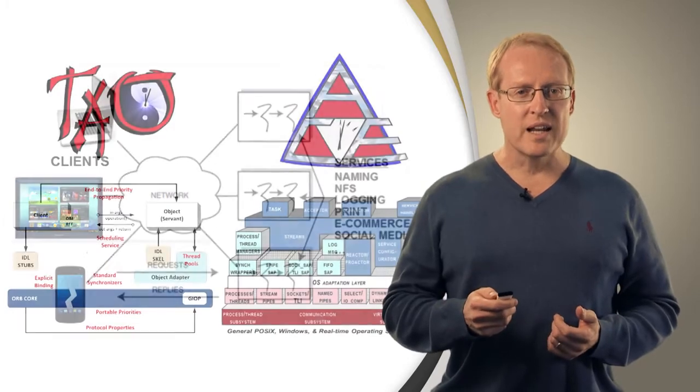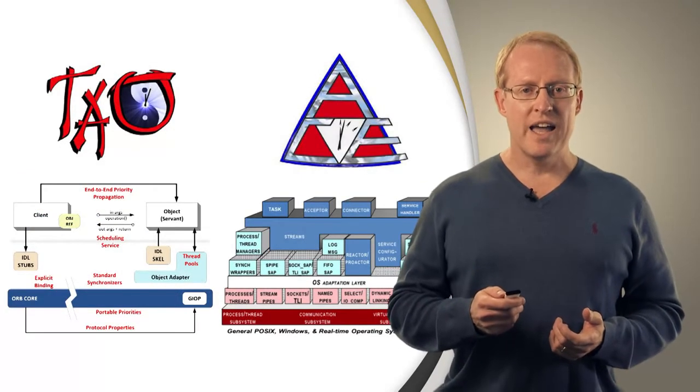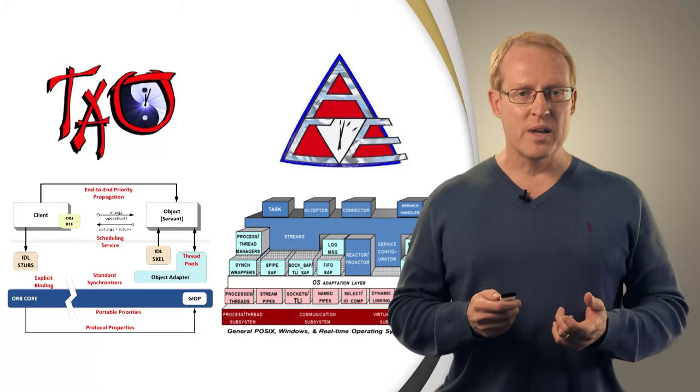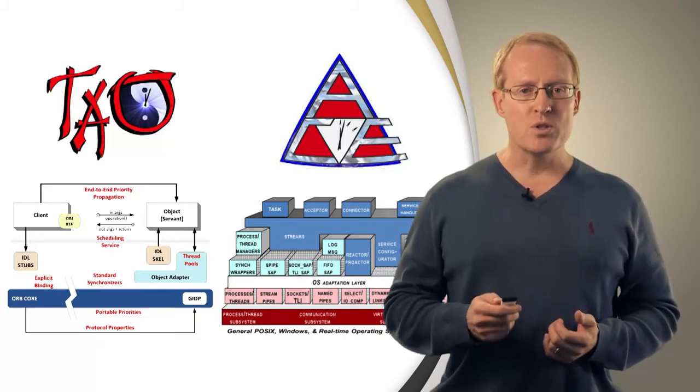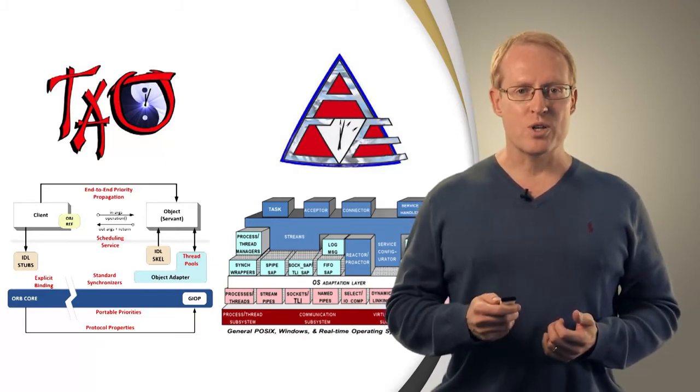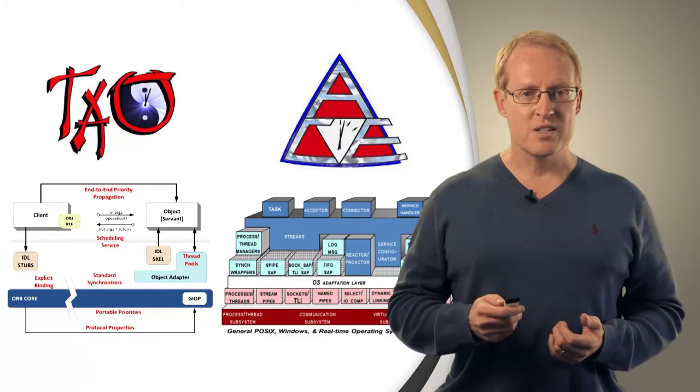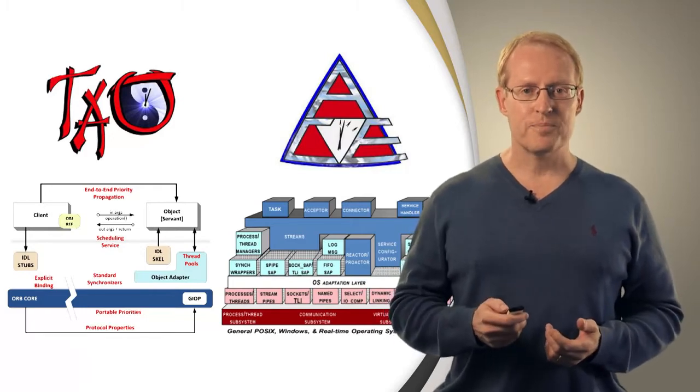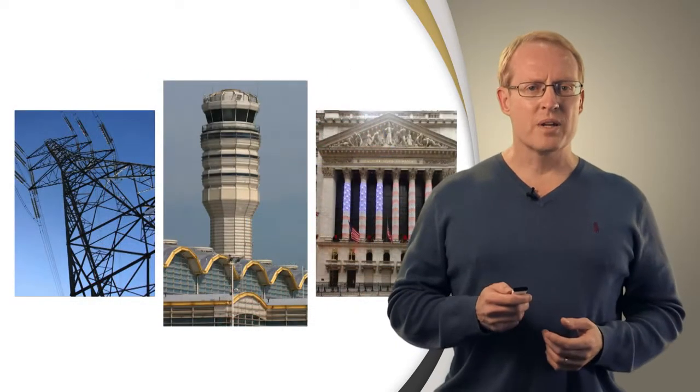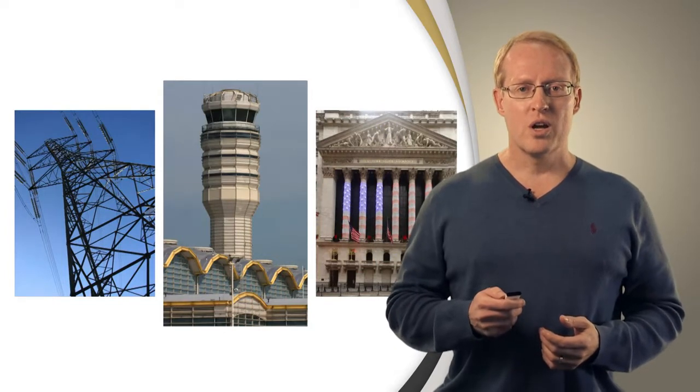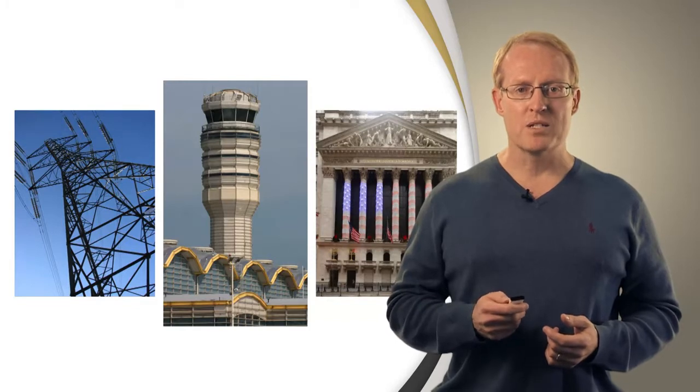Since the early 1990s, my colleagues and I have been researching, developing, and applying open source concurrent and network software written in C++, Java, and C. The software we've developed has been used by thousands of projects around the world, often for mission-critical, distributed real-time and embedded systems, where the right answer delivered too late becomes the wrong answer.